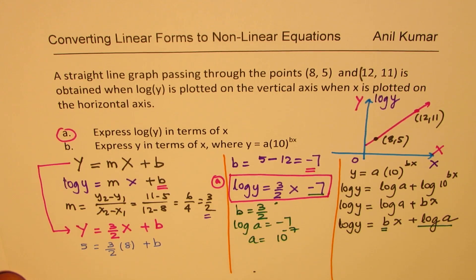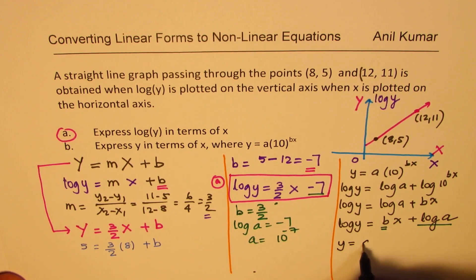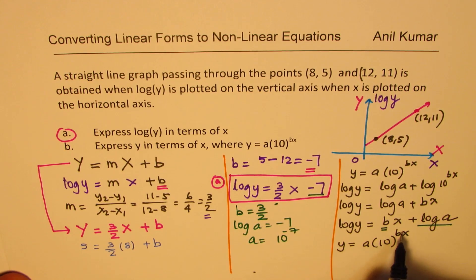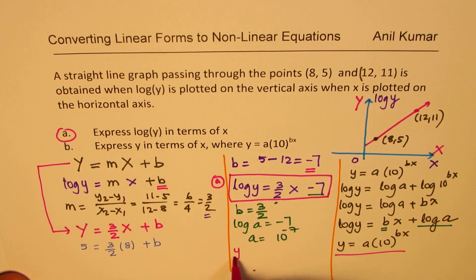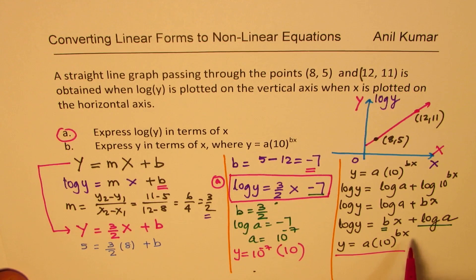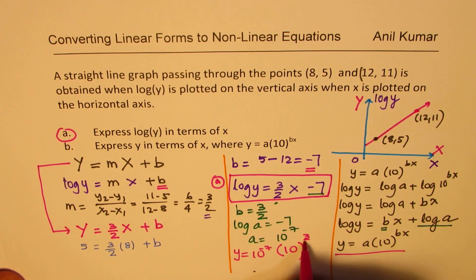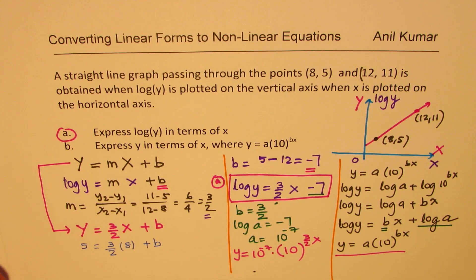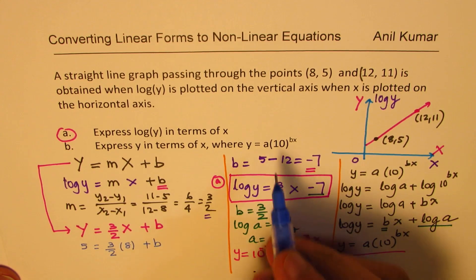So in this equation, which is y equals a times 10 to the power of bx, we know what a and b are. So in this equation, we know that a is equal to 10 to the power of -7. So we can write this as y equals 10 to the power of -7 times 10 to the power of bx. b is 3/2, so we have 3/2 times x. Do you see that? So that is how we can relate this in the terms of an exponential function.